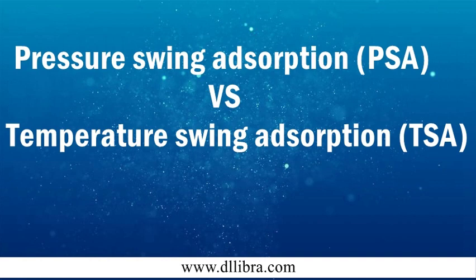To realize the recycling of adsorbents, adsorbent regeneration is the key step. According to the desorption mechanism, there are four methods of adsorbent regeneration: pressure reduction regeneration, heating regeneration, flushing regeneration, and displacement regeneration. In practical application, pressure reduction and heating are the basis, while flushing or displacement regeneration serve as supplements. The whole adsorption separation process is cyclic through adsorbent desorption regeneration. Gas adsorption and separation can be divided into two categories — PSA and TSA — according to the main regeneration method used.